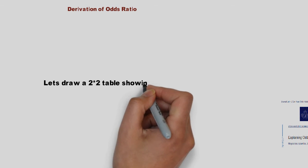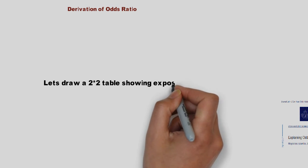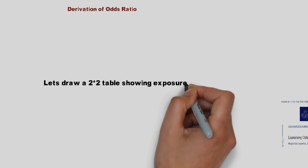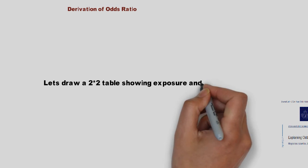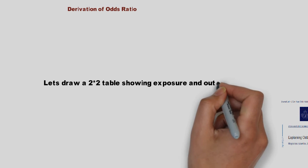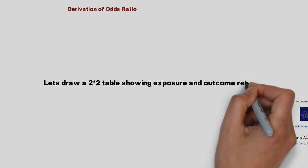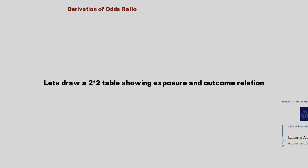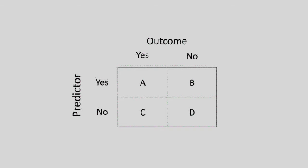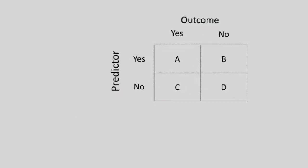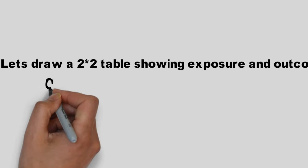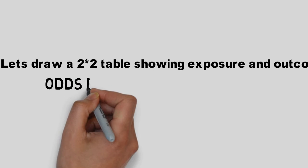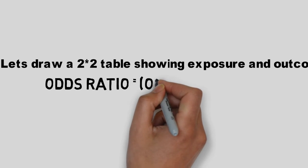When you do a 2 by 2 table, we represent different cells by A, B, C, and D. This is the sample table showing the relationship between exposure and outcome.